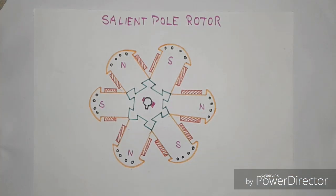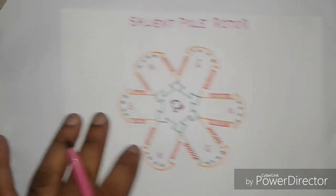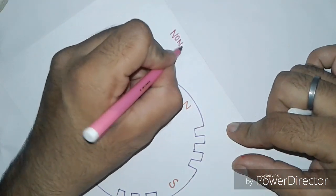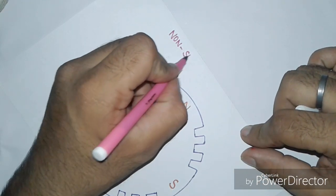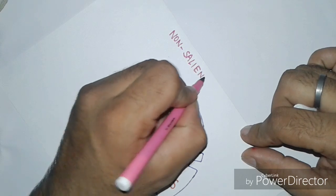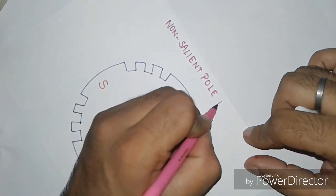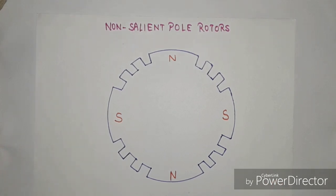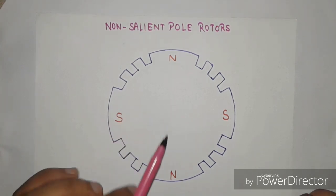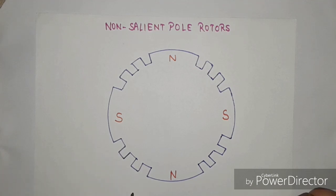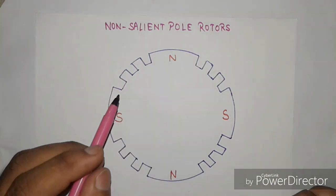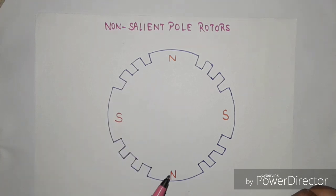The next rotor is non-salient pole type rotors. These rotors are also known as cylindrical type rotors. These rotors are used for very high speed alternators such as thermal power plants. Cylindrical rotors are made up of solid forging of high-grade nickel chrome molybdenum steel.